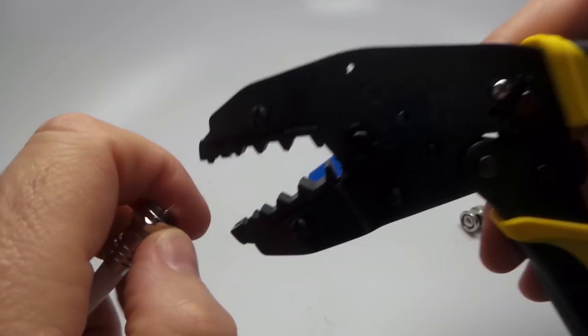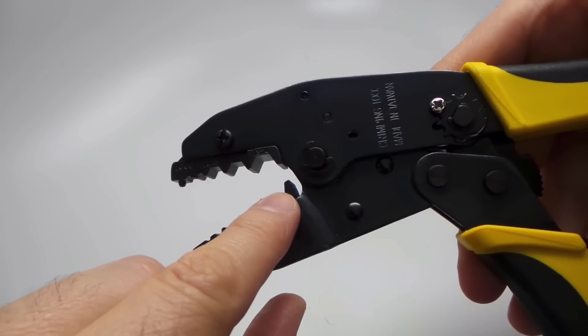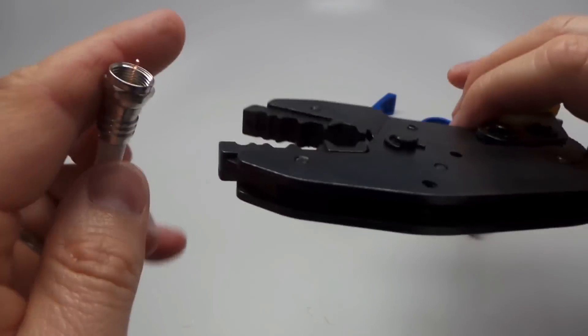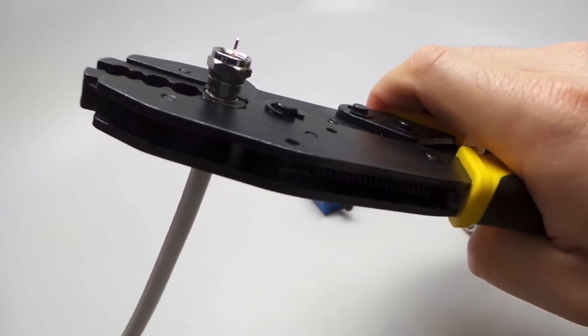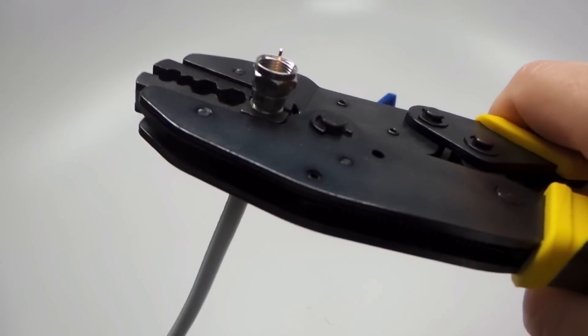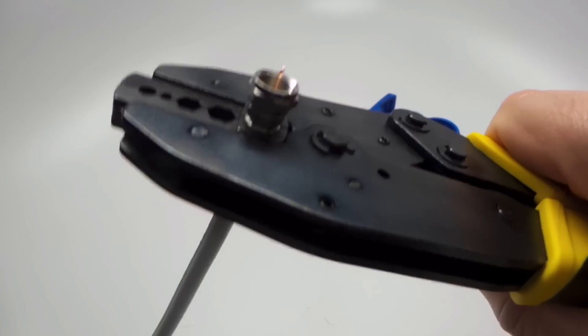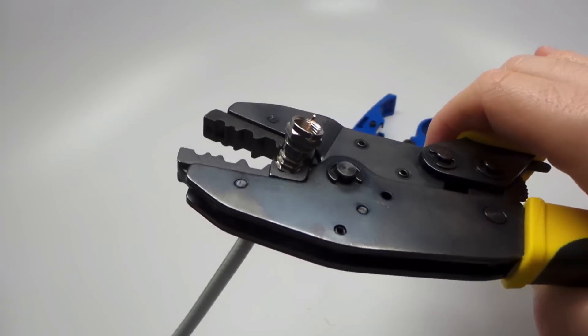And then I'm going to grab the TL-70 crimping tool and use the largest setting on it, which is 0.324 inches. I'm going to insert the F connector into the crimping tool, and then firmly with both hands clamp down on it. It ratchets all the way.